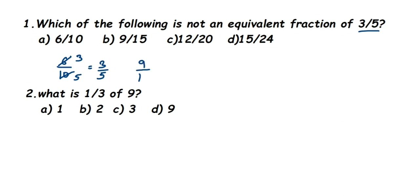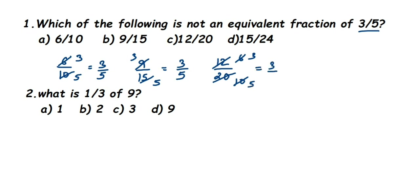Next, 12/20 — cancel in the 2 times table: 2×6=12, 2×10=20, giving 6/10, then cancel again: 2×3=6, 2×5=10, we get 3/5. The last option is 15/24 — we cannot cancel in 2, so try 3: 3×5=15 and 3×8=24, giving 5/8, not 3/5. So option D, 15/24, is not an equivalent fraction of 3/5.